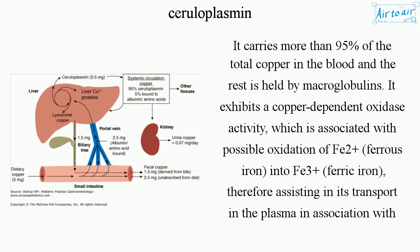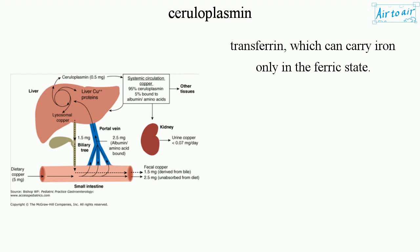It carries more than 95% of the total copper in the blood, and the rest is held by macroglobulins. It exhibits a copper-dependent oxidase activity, which is associated with possible oxidation of Fe2+ (ferrous iron) into Fe3+ (ferric iron), therefore assisting in its transport in the plasma in association with transferrin, which can carry iron only in the ferric state.